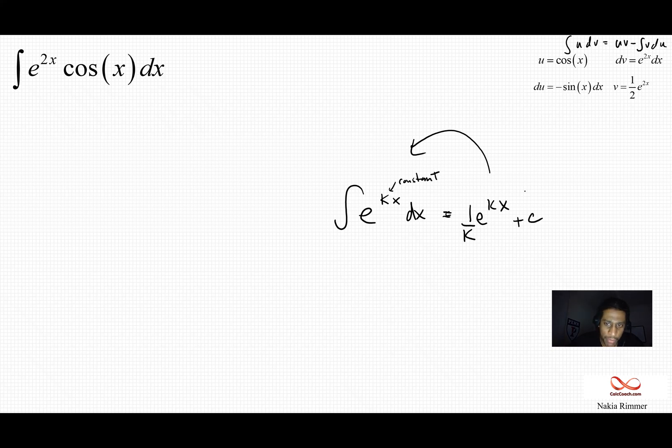You shouldn't have to do a u sub to show that part. So anyway, because of that, then every time you integrate e to the kx, you're going to get a factor of 1 over k multiplier.